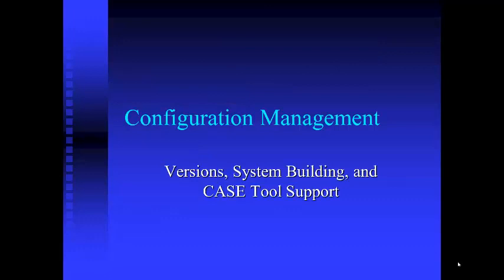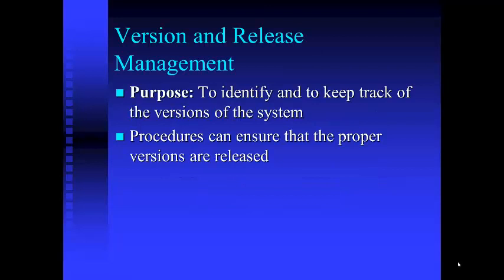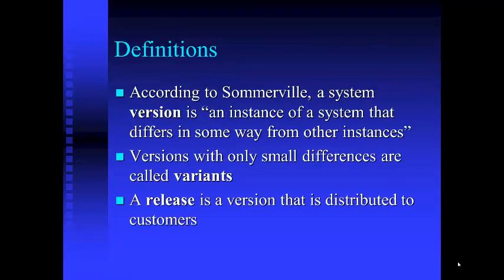Let's look at versioning, system building, and CASE tool support for configuration management. Version and release management exists to identify and keep track of versions of systems, and you need procedures to ensure proper versions are released. Somerville has three definitions: a version is an instance of a system that differs in some way from other instances; versions with only small differences are called variants; and a release is a version distributed to customers.